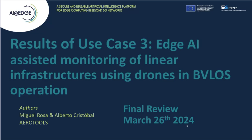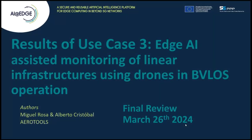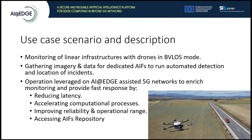We are going to review the results obtained in use case 3 at the end of the AIRDH project. This use case is designed to run monitoring of roads with drones operating in visual line-of-sight mode, with the aim of gathering images and data from the road and users to detect and locate automatically incidents involving these users.